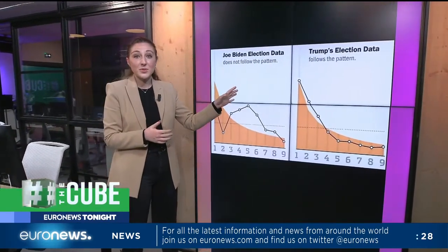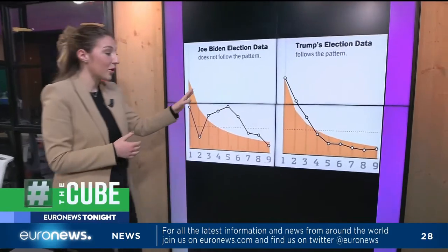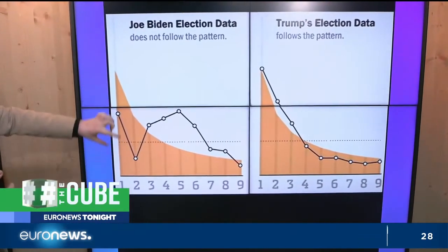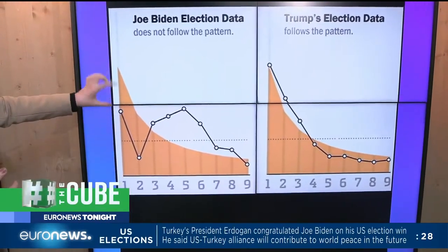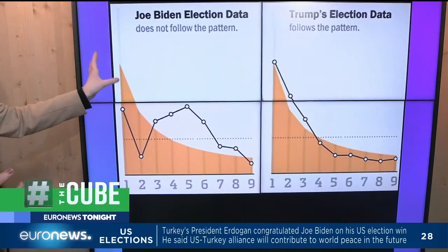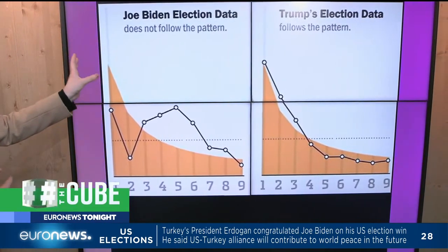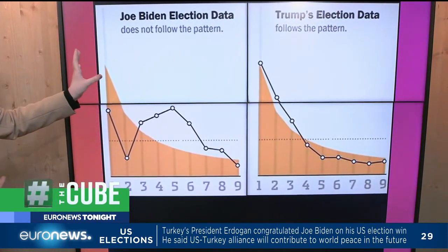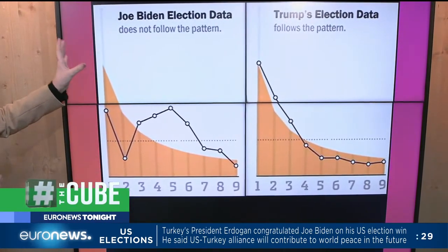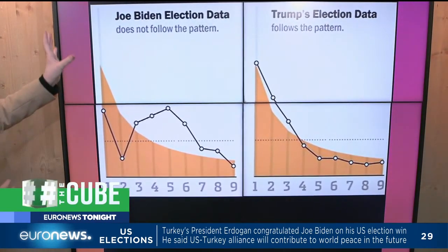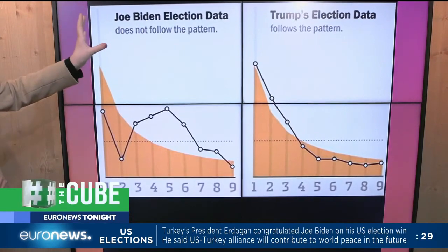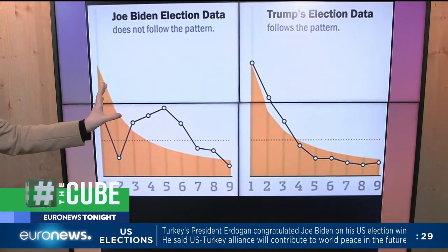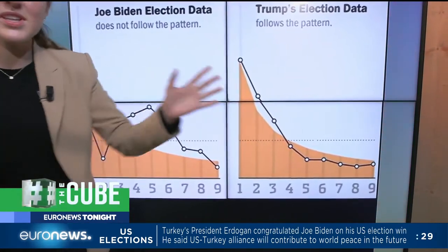Here's an example of the graphs we're seeing on both platforms. On a county-per-county basis, the numbers should start with one mostly. For example, 1,000 votes should be the most common. Using Joe Biden's data, it doesn't follow this trend — but Trump's does.